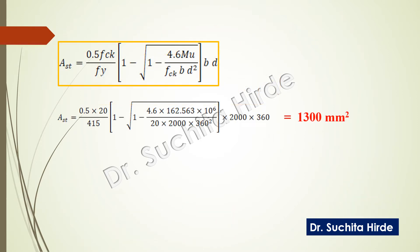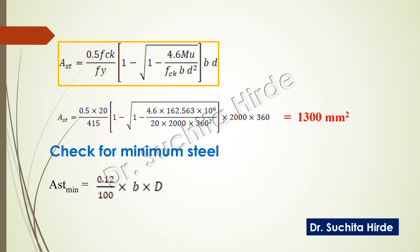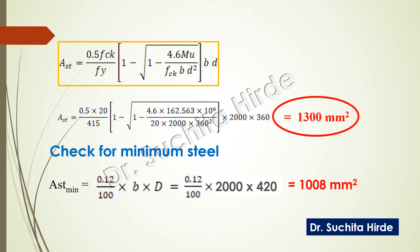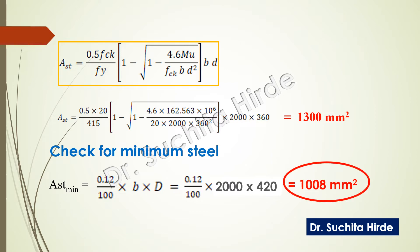Substituting all required values in the formula, we get area of steel equal to 1300 millimeter square, and minimum steel as 1008 millimeter square. Since 1300 millimeter square is more than the minimum reinforcement, we will provide Ast equal to 1300 millimeter square.